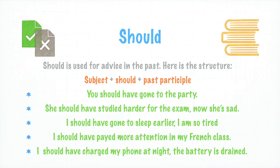You should have gone to the party. Debiste haber ido a la fiesta. She should have studied harder for the exam. Now she's sad. Debió haber estudiado más para el examen. Ahora está triste. I should have gone to sleep earlier. I am so tired. Debí haber ido a dormir antes. Ahora estoy muy cansado. I should have paid more attention in my French class. Debí haber puesto más atención en mi clase de francés. I should have charged my phone at night. The battery is drained. Debí haber cargado mi celular en la noche. La batería se está agotando.